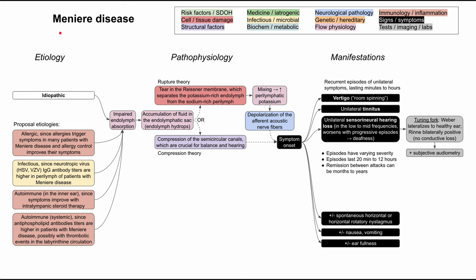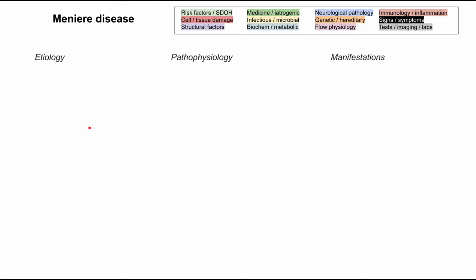This is a mechanism of disease map for Meniere disease. This is a cause of peripheral vertigo, and we'll be talking about the etiology, the pathophysiology, and the manifestations of Meniere disease. As in all of these flowcharts, each of the boxes is color-coded according to the legend in the top right, and we'll be clearing all of the boxes and repopulating the charts and talking through them one by one.